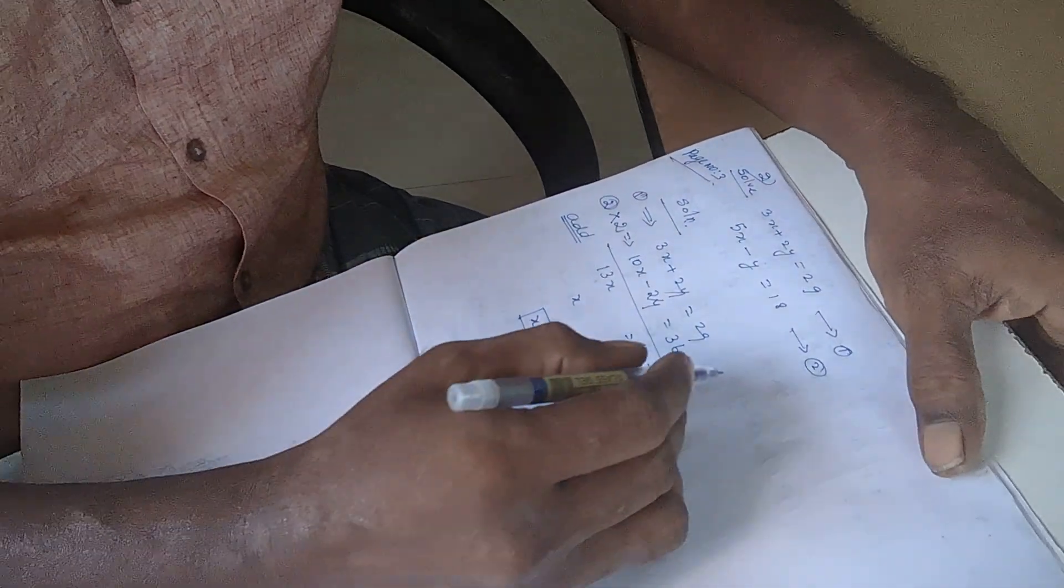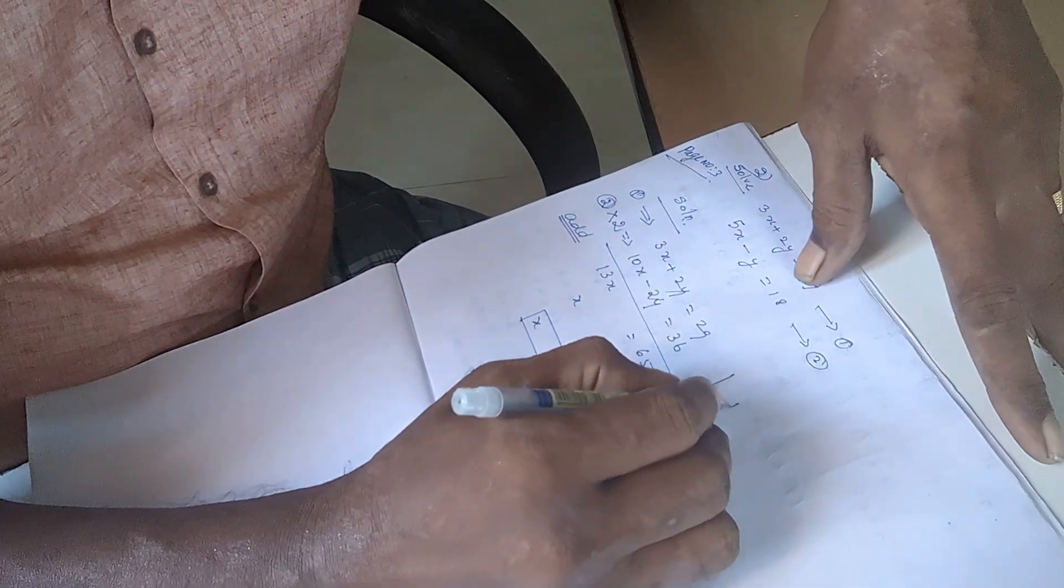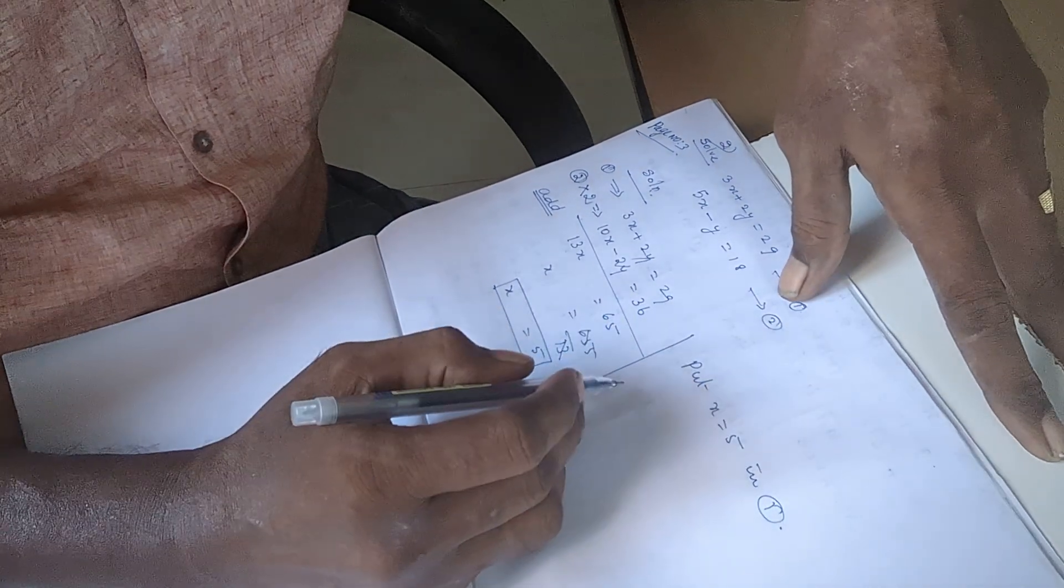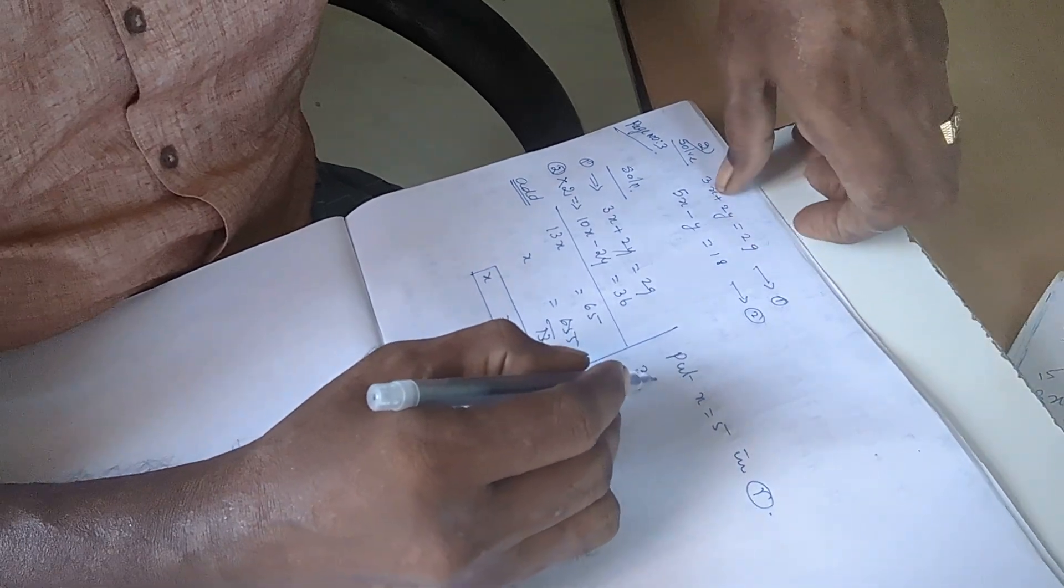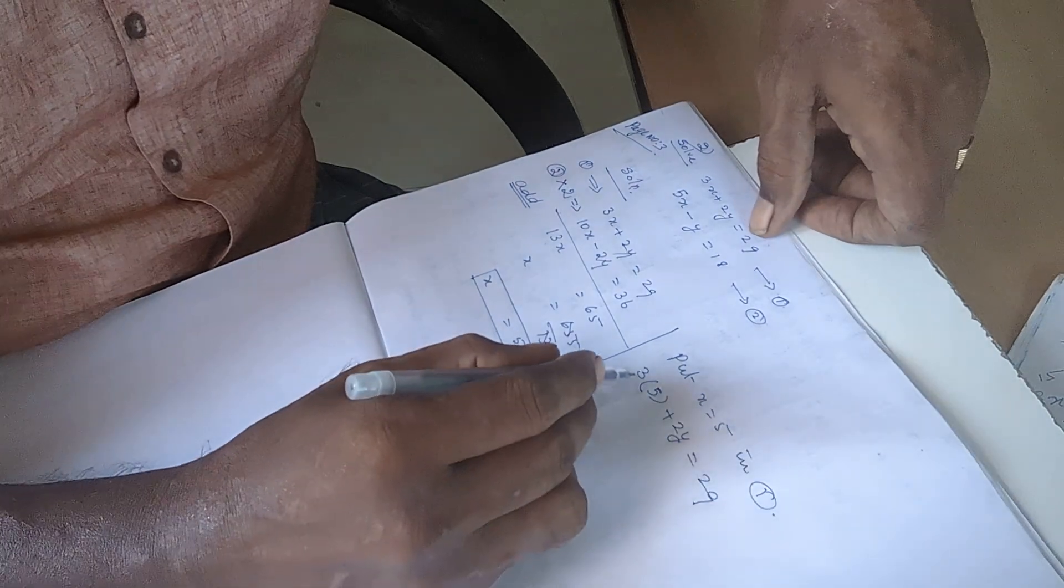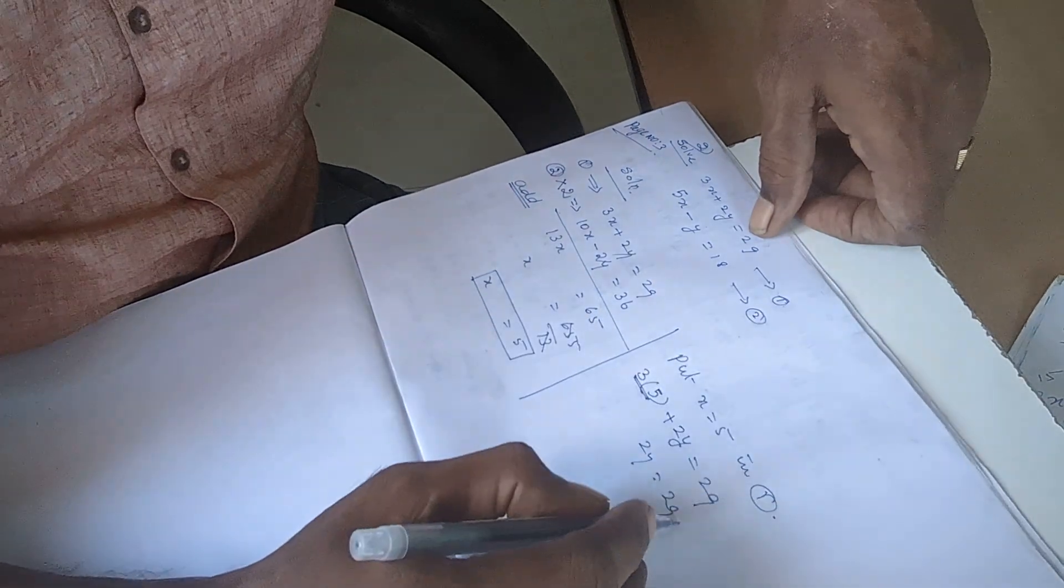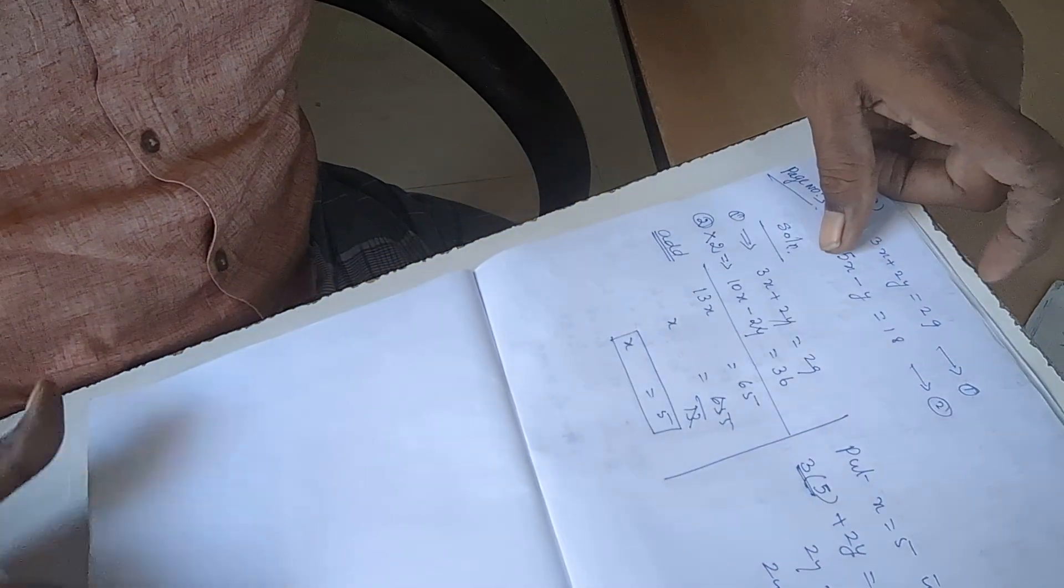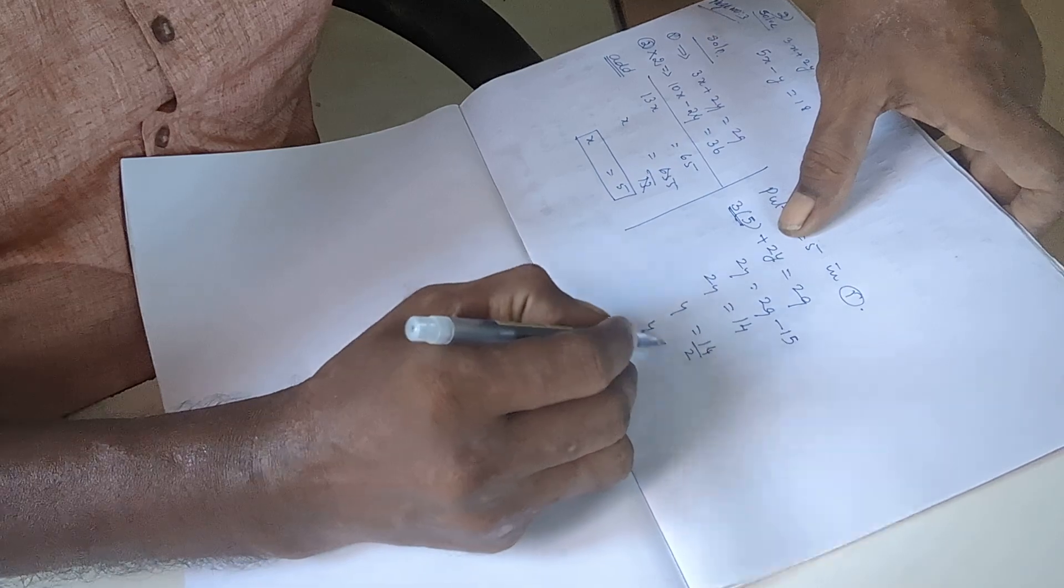Now we have to find the next value. Finding for y, put x is equal to five in equation one. Three into x is five, plus two y equals twenty-nine. This is fifteen, two y equals twenty-nine. This fifteen will come to this side minus fifteen, so two y equals fourteen. So y equals fourteen by two, y equals seven.